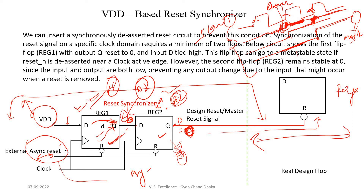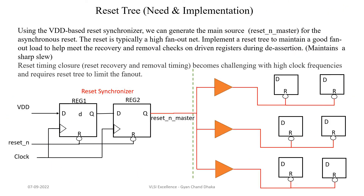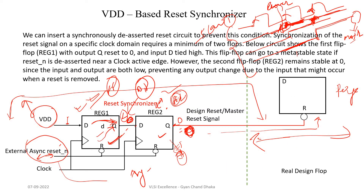I hope this reset synchronizer and its functionality is clear. Now let's see another important concept — the reset tree. Let's see what is a reset tree, why we need it, and how we implement it. As you saw in the reset synchronizer implementation, we have our master reset signal going to all the design flip-flops. If there are thousands of flip-flops, this particular net is driving all their reset pins. So what is the problem with this? There is a fundamental problem with this.